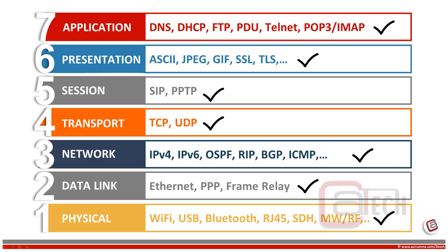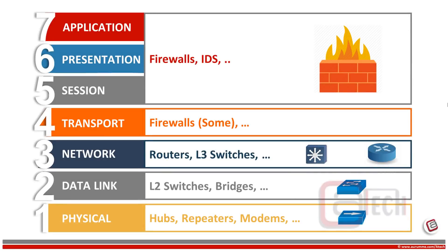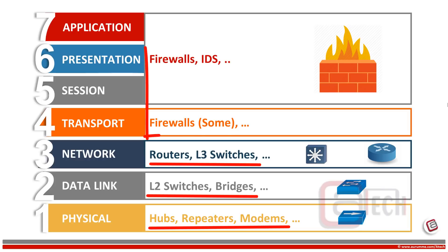These are only a few examples of famous protocols on each layer; there are many other protocols associated with each layer. Similar to protocols, each layer has associated equipment as well. For example, hubs and repeaters operate at layer 1, switches operate on layer 2, routers and layer 3 switches operate on layer 3, and firewalls work on the application layer and some on the transport layer as well.